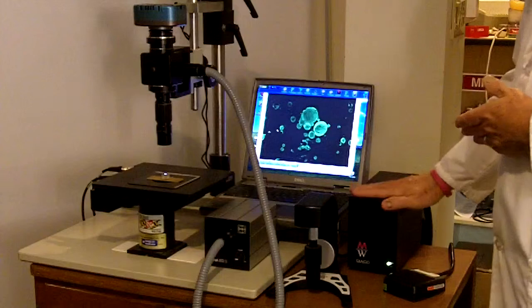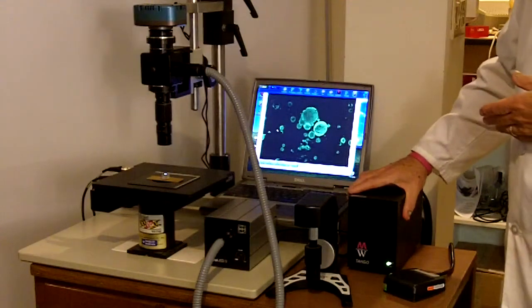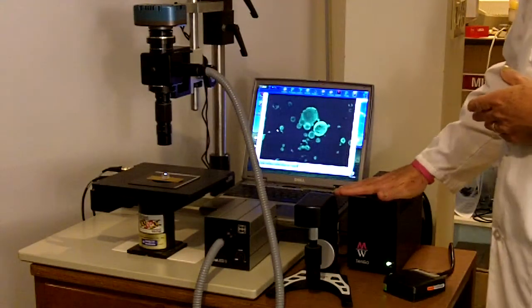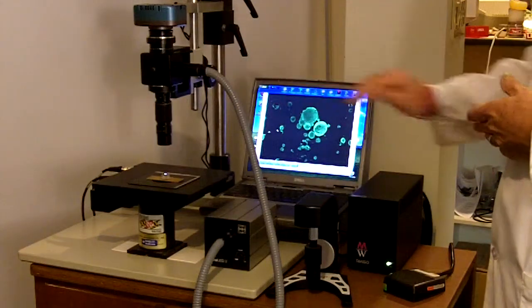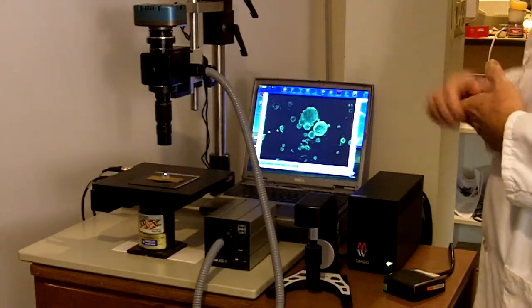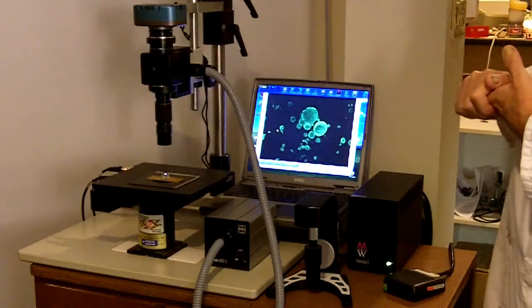The box that you see here is the Tango box from Mertzhauser. This is used to control the hand controller, the X, Y, and the Z on the microscope itself.